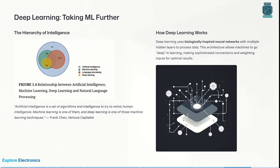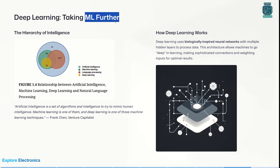Now let's understand deep learning. Deep learning takes machine learning further — we go deeper with respect to machine learning concepts. Looking at the relationship between AI, machine learning, and deep learning: AI is the outer layer or superset, inside that we have ML, and inside that we have deep learning. We also have natural language processing (NLP) alongside these. Artificial intelligence is a set of algorithms trying to mimic human intelligence; machine learning is one of them; and deep learning is one of those machine learning techniques.